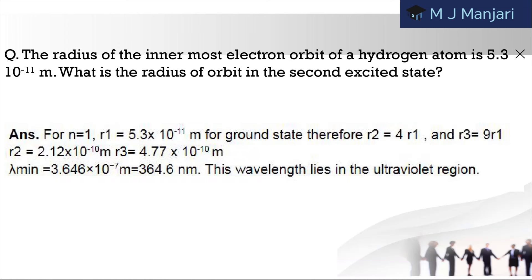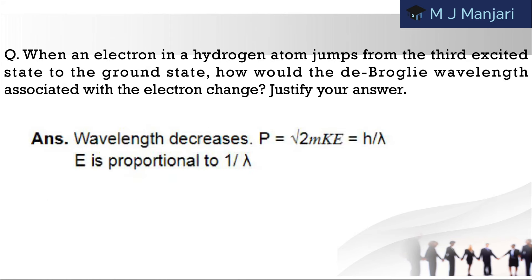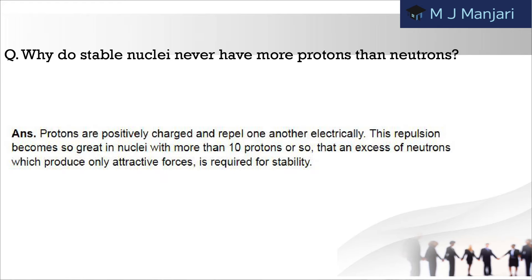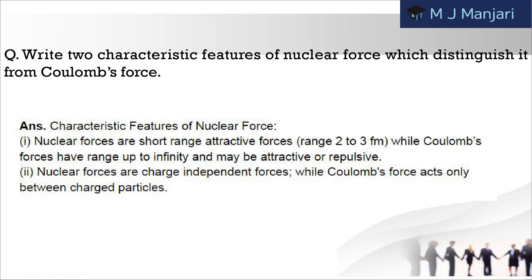Next: the radius of the innermost electron orbit of a hydrogen atom is 5.3×10⁻¹¹ meters. What is the radius of the orbit in the second excited state? Next: calculate the de Broglie wavelength of the electron orbiting in the n=2 state of the hydrogen atom. Next: when an electron in a hydrogen atom jumps from the third excited state to the ground state, how would the de Broglie wavelength associated with the electron change? Justify your answer. Next: why do stable nuclei never have more protons than neutrons? Next: the wavelength of the second line of the Balmer series in hydrogen atom is 4861 Angstroms. Calculate the wavelength of the first line. Next: write two characteristic features of nuclear force which distinguish it from Coulomb's law.